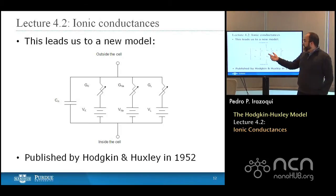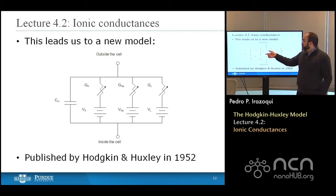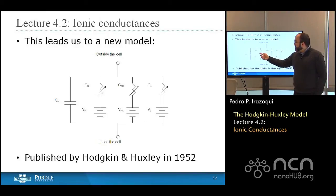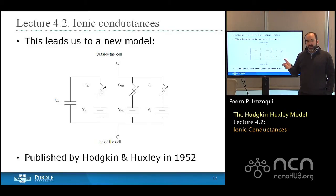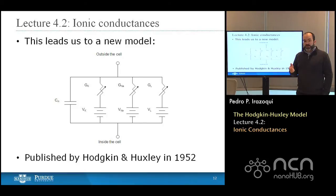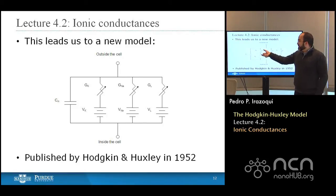For each of potassium, sodium, and leakage, you have a conductance — conductance being one over resistance. The arrow drawn through each resistor indicates it is variable; the resistance is no longer a constant but a function of time, membrane voltage, temperature, and other factors. Determining what exactly these values are is our challenge here.